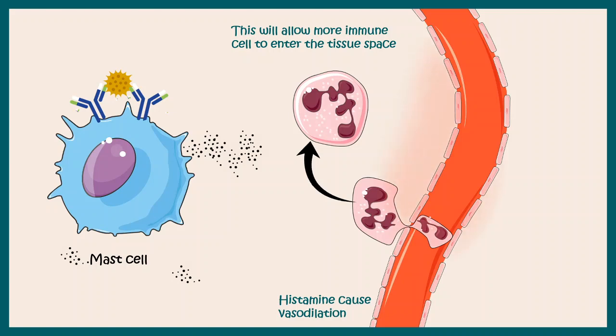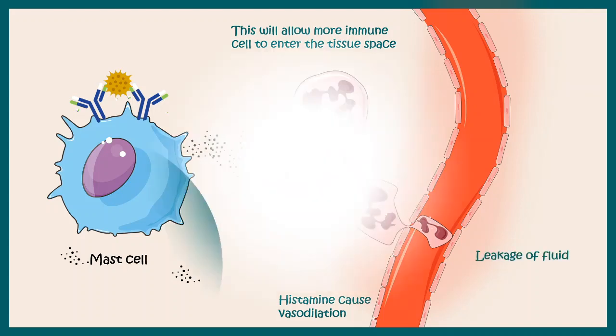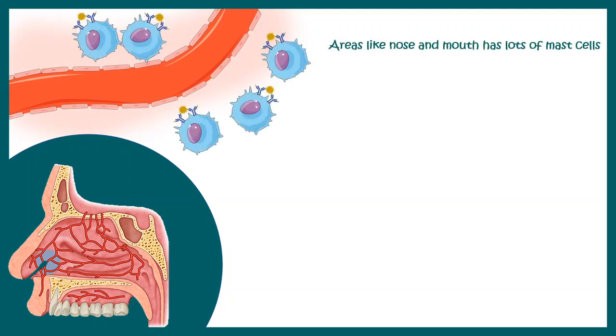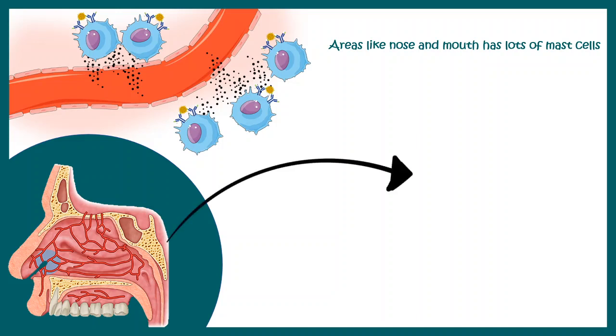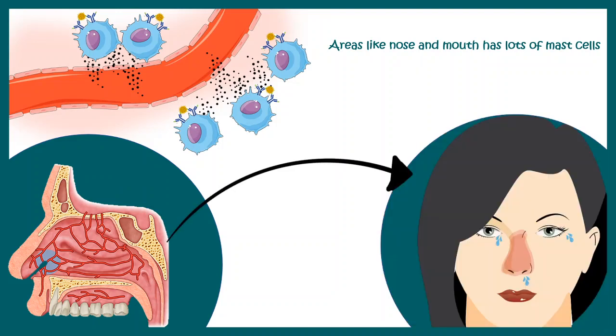Vasodilation can also lead to fluid leakage in this area, resulting in the excessive fluid that comes out of the nose or eyes. Overall, the nasal mucosa is highly inflamed, and the large number of mast cells near the nasal mucosa all degranulate, making the capillaries around the nose highly permeable. This leads to a runny sensation in the nose, excess fluid, and we can see watering of the eyes or watering of the nose.